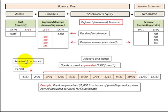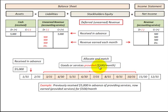We receive a payment in advance — in this example a $5,000 payment — in advance of providing any goods or service. We receive the payment up front and then we start providing the services. In this example I use the time frame of March through October, earning $500 per month. So what we're trying to do is allocate the unearned revenue to earned revenue.